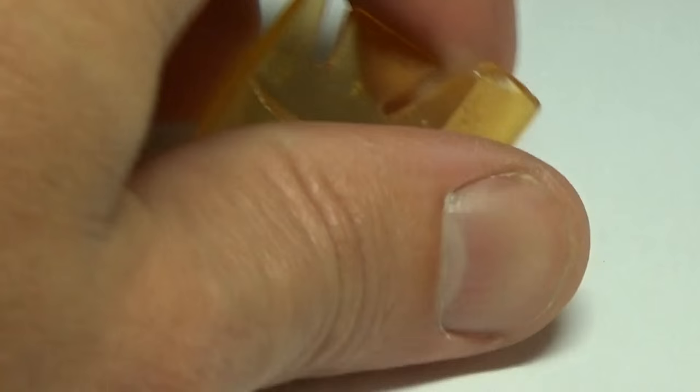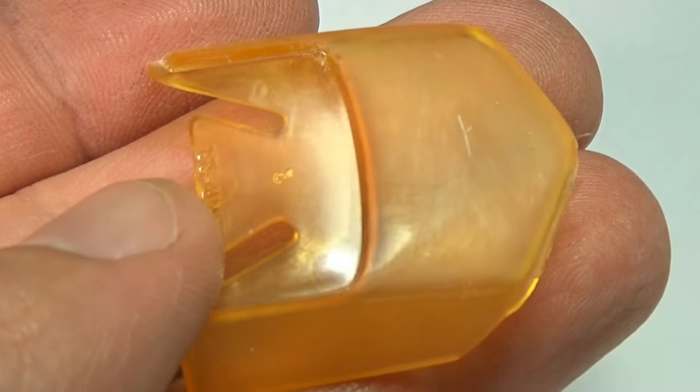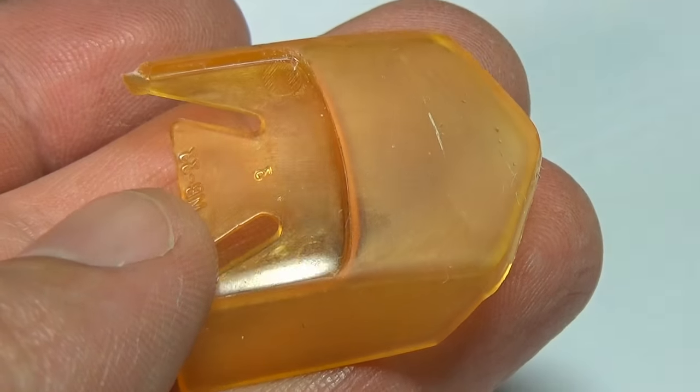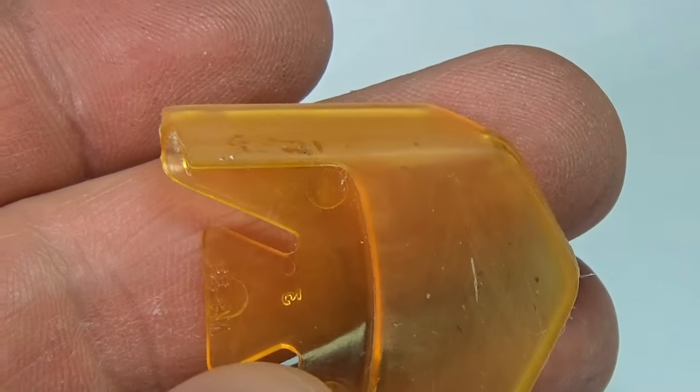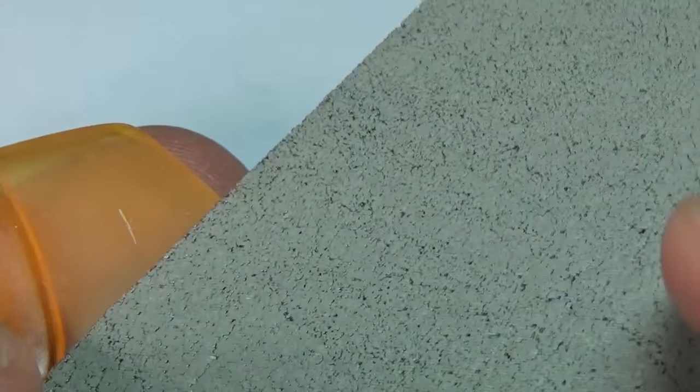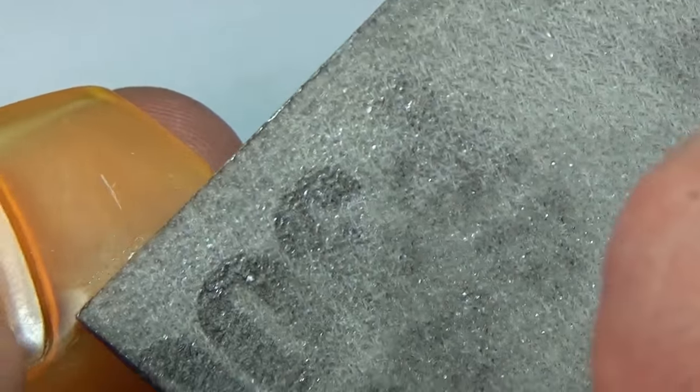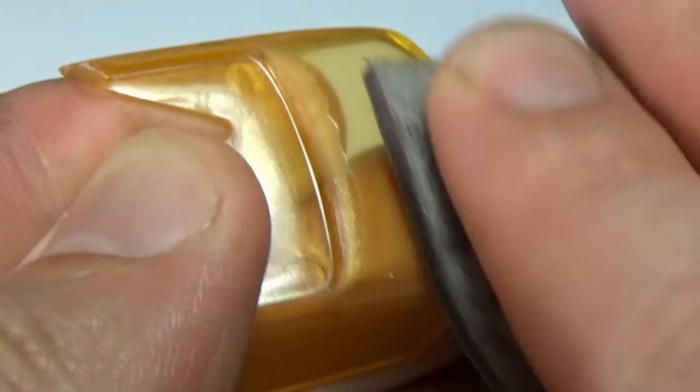Once you're done sanding at one grit, you simply move to the next higher grit. In my case I'm moving to 3000 then 3500. I also find it easier to buy wet-dry sandpaper and sand under a small stream of water in a sink. This will keep the plastic from gumming up your sandpaper.